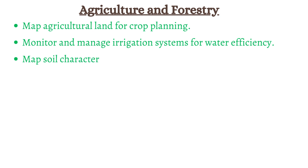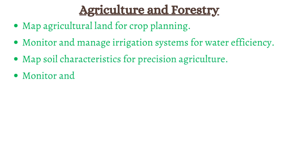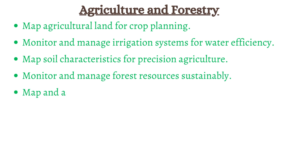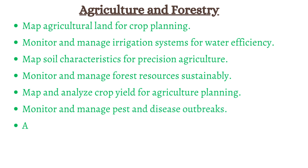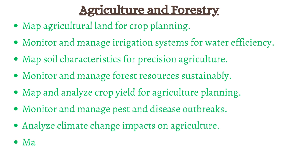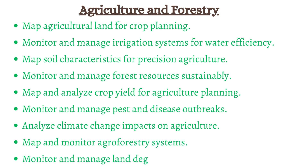Map agricultural land for crop planning and monitor and manage irrigation systems for water efficiency. Map soil characteristics for precision agriculture. Monitor and manage forest resources sustainably. Map and analyze crop yield for agriculture planning. Monitor and manage pest and disease outbreaks. Analyze climate change impacts on agriculture. Map and monitor agroforestry systems and monitor and manage land degradation.